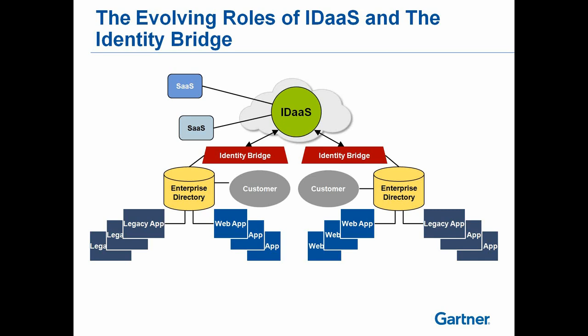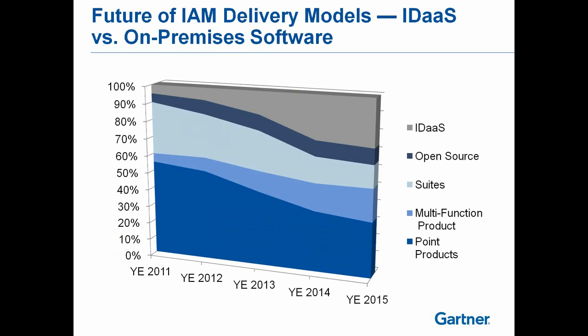This has been an area of increasing interest for clients. Looking at where IAM delivery is going: historically clients wanted point solutions for specific functionality. Over time, IDaaS adoption will increase — it's under 10 percent today but interest is growing. By 2016, we're saying there's roughly a one-in-four chance that IAM functionality will be delivered as a service.